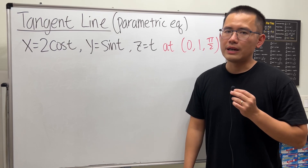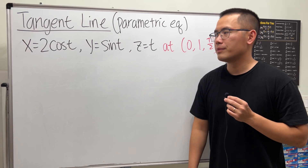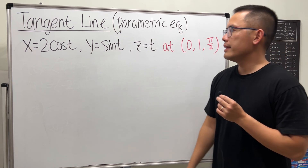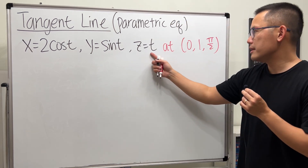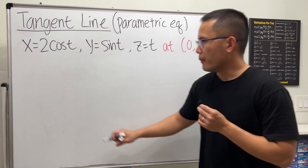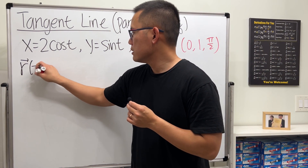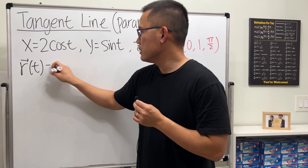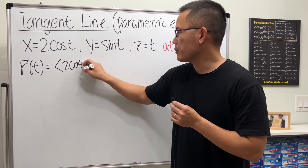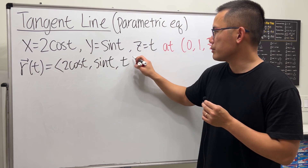This is the Calculus 3 version of how to find the equation of a tangent line. We want a parametric equation, and the curve we have is described by this at this point. We can write this down as R of T — that's our vector function — so we have the X component, Y component, and also the Z component.